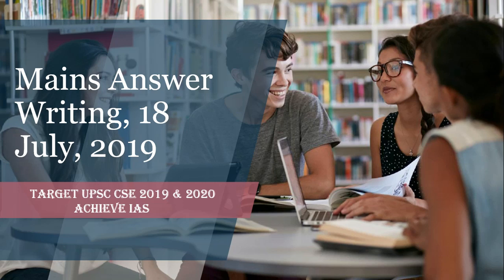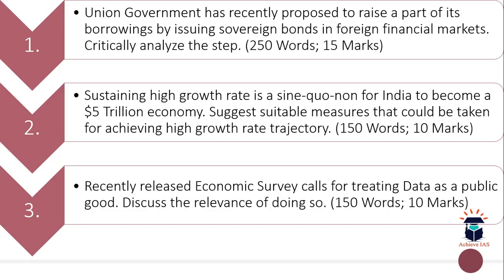Today is 18th July, so let's see the questions of today. The first question is: 'The Union Government has recently proposed to raise a part of its borrowings by issuing sovereign bonds in foreign financial markets — critically analyze the step.' Here you have to critically analyze the step taken to raise borrowings by issuing sovereign bonds. The word limit is 250 and the maximum marks are 15.